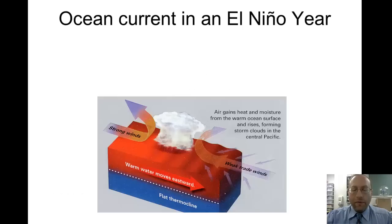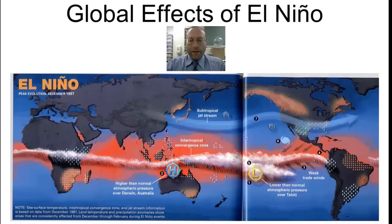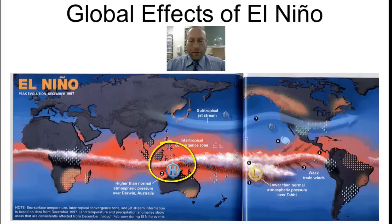Now in an El Niño year — and we really don't know what causes this to happen — the currents will shift to the other direction, going towards the east rather than towards the west. The trade winds will weaken or even reverse, causing the low to shift from the western Pacific to the central Pacific. You can see the low is now found in the central Pacific over Tahiti, and where previously it would be raining in a normal year, we have a high — so there we have droughts.